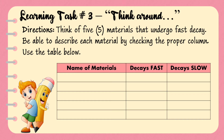Learning task number three. Think around. Think of five materials that undergo fast decay. Be able to describe each material by checking the proper column. Use the table below.